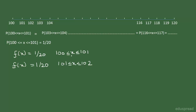Notice that I am using small x here. This is how we denote the values of a random variable. To denote a random variable we use capital X, and to denote the values of a random variable we use small x. This is the notation that we follow.